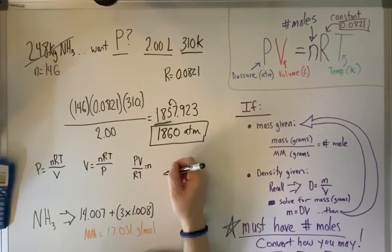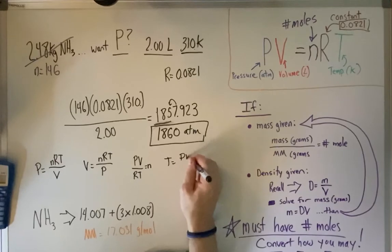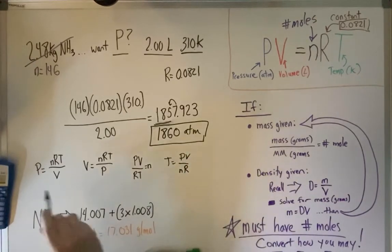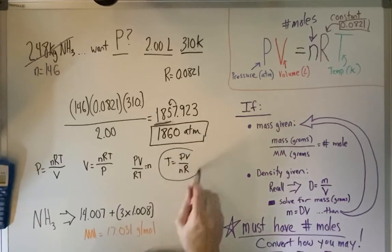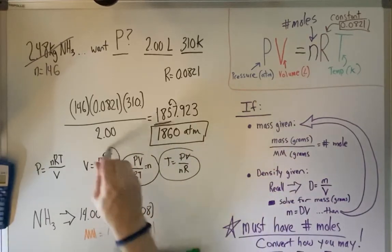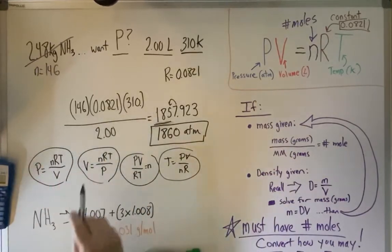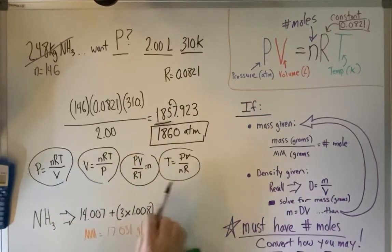And then if we're solving for T, you're not going to ever solve for R. R is always going to be given to you. T is going to be PV divided by NR. So these are, you know, maybe some helpful things. You might want to pause, take a picture, write it down. For ideal gases, these are the different ways you'd move the ideal equation around. So that way you could solve it for this particular example.